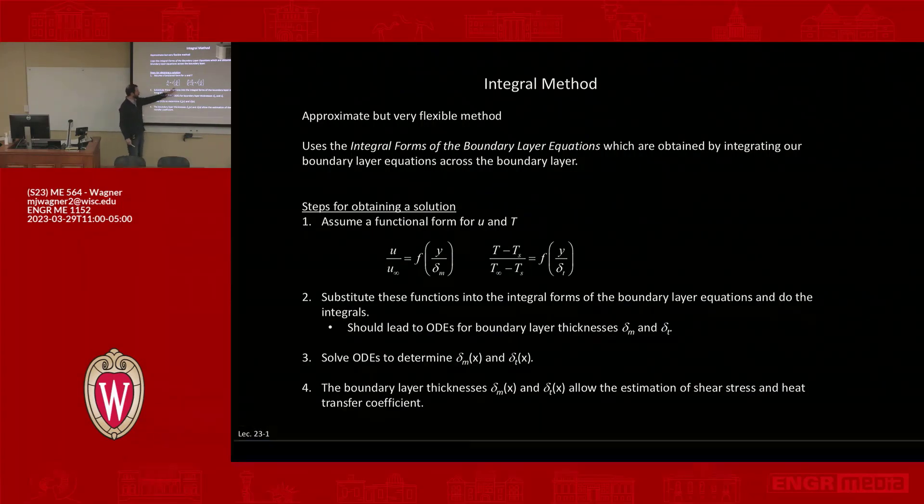But you end up getting rid of any functional dependence of y. And again, we're assuming a relationship that's only functionally dependent on y and it scales with the boundary layer thickness. So there's no dependence on x either. The thickness depends on x, but you solve for that and then you get this relationship that's valid everywhere. Does that answer your question?